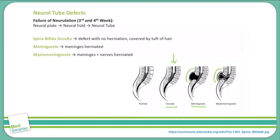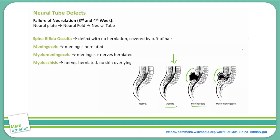In spina bifida occulta, meningocele, and myelomeningocele, the defect is at least covered by a layer of the meninges or skin. This is important to note as we talk about myeloschesis. A myeloschesis is similar to a myelomeningocele, but it lacks any kind of skin or meningeal covering over the herniated nervous tissue. The escaped contents of the spinal cord are open to the environment without any tissue covering. This is a very serious condition.